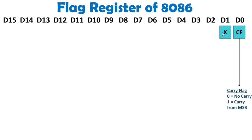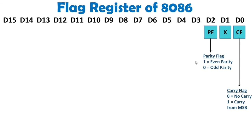D1 is don't care. With D2, we have the parity flag, which gives you information about even and odd parity. Parity is calculated based on the number of ones in the result — for example, when you perform addition, subtraction, or any logical operation. If the number of ones is even, this flag gets set to 1; otherwise it will be 0.